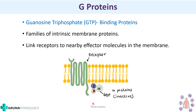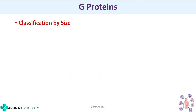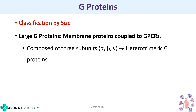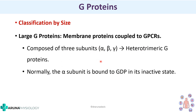G-proteins or GTP binding proteins are intrinsic membrane proteins that link these receptors to the effector molecules. We can classify G-proteins based on size into large G-proteins and small G-proteins. It is the large G-proteins that are associated with G-protein coupled receptors. These large G-proteins are composed of three subunits - alpha, beta, and gamma - and that is why they are also called heterotrimeric G-proteins. It is normally the alpha subunit that is bound to GDP in its inactive state.